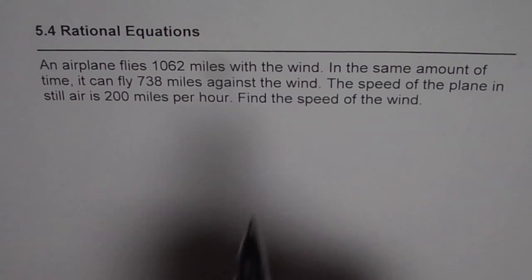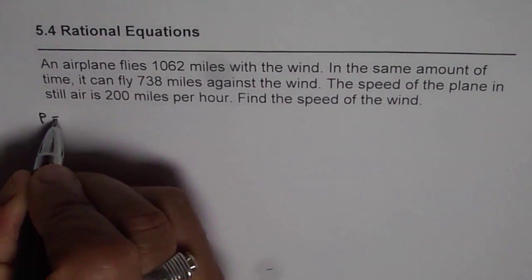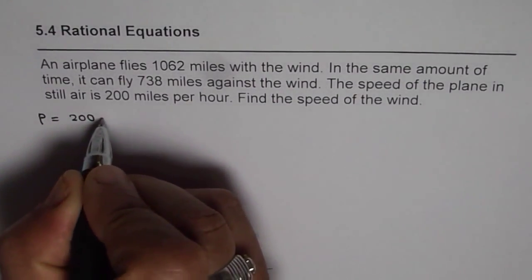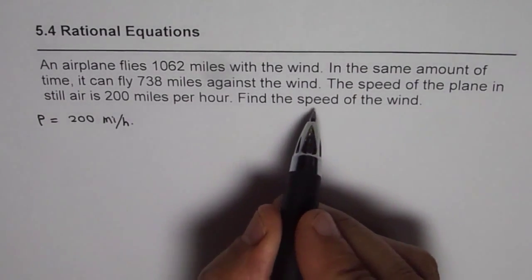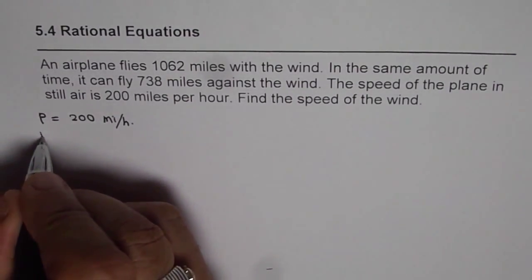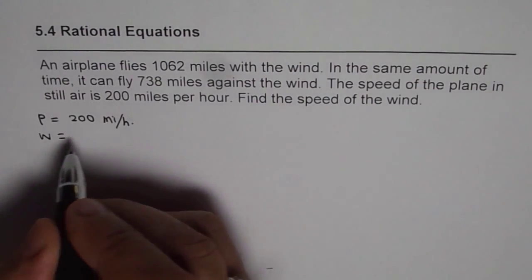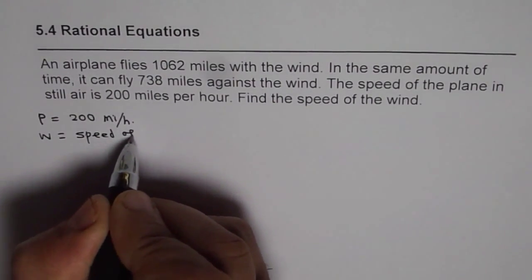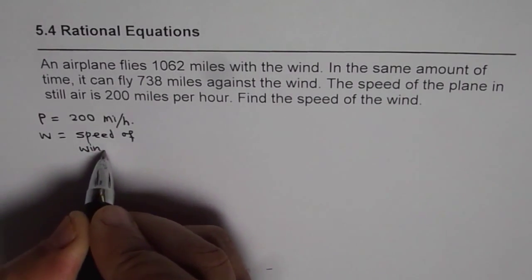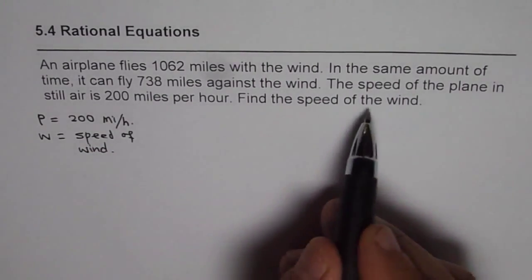So we know speed of plane, let us say speed of plane P was 200 miles per hour. And we need to find speed of wind. Let us call that as w which we do not know. So that is speed of wind. So we have defined a variable which we need to find.